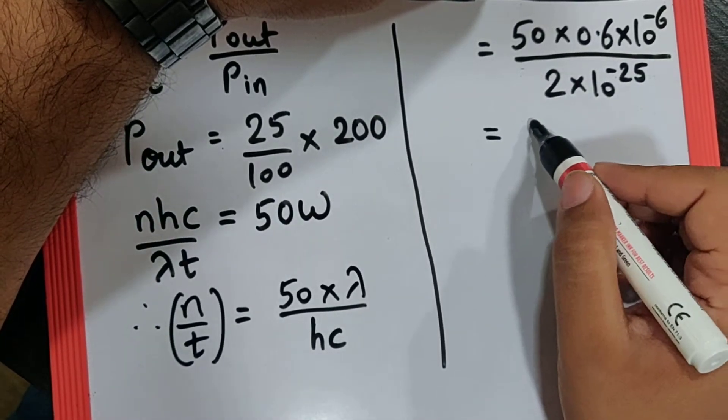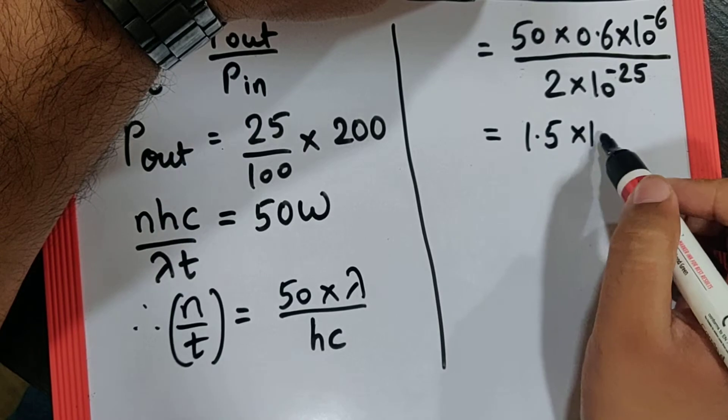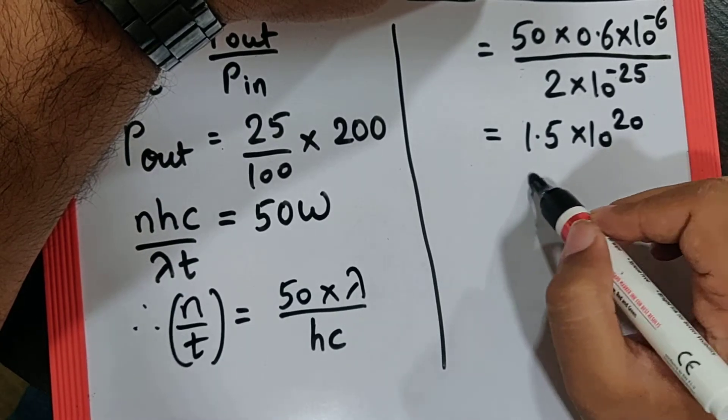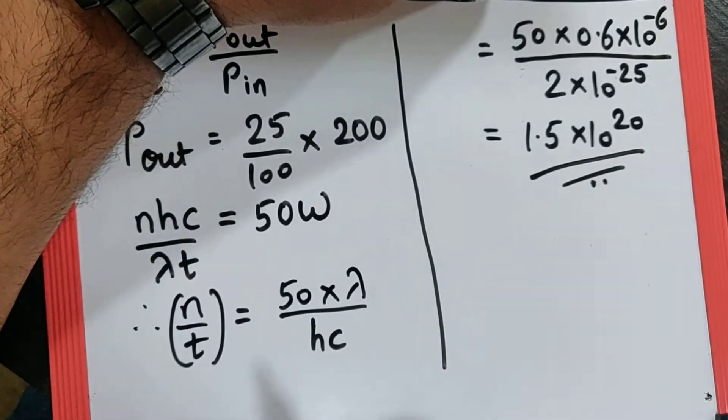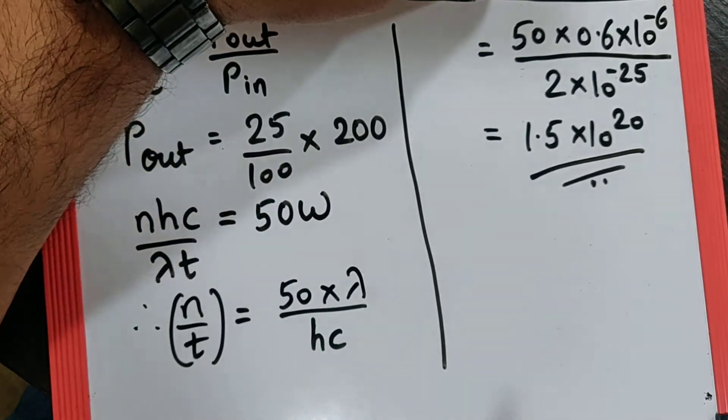If you calculate this, you get the value as 1.5 × 10^20. So these are the number of photons per second emitted by the lamp.